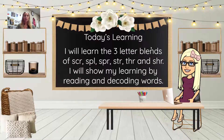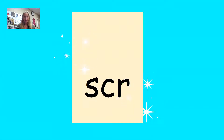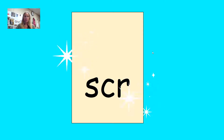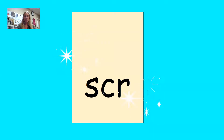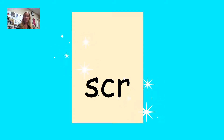We're working on three-letter blends this week. Remember, a blend is three letters that work together and they sound like one sound. We hear each one of the letters — different than a digraph. A digraph makes a whole new sound, but with a blend we hear each individual sound, but we say it so fast it comes out sounding more like one sound.